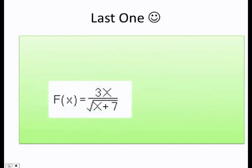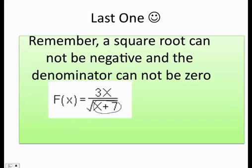Now, we have the last one. Here, you can see there is a combination between a fraction and a square root. So, what do I do? Not a problem. Just grab, again, the bottom, which is x plus 7. And I remember, a square root can never be negative, and the denominator cannot be zero.